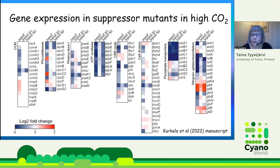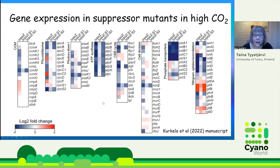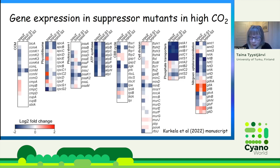Looking at gene expression in the suppressor lines, unlike in Delta-RPOZ, the carbon-concentrating mechanism genes express just like in the control strain. In some cases, like ATP synthase genes, they are still downregulated, but not as heavily as in Delta-RPOZ. Calvin-Benson cycle enzyme genes express normally in these suppressor mutant lines. However, phosphate transporter genes remain downregulated, and quite many nitrogen uptake genes remain quite heavily downregulated — but not as much as in Delta-RPOZ. This explains why cells are able to grow in high CO2.